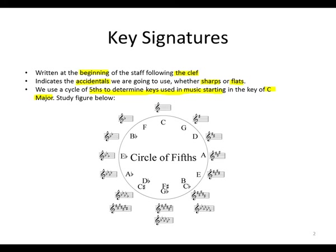Now with the cycle of fifths, it will help us determine the next key by using an anti-clockwise method or a clockwise method. When we go clockwise, we count 5 from C, and when we go anti-clockwise, we count 4 from C.